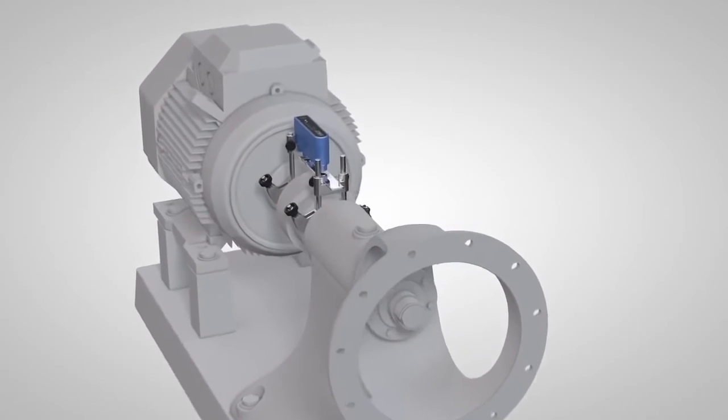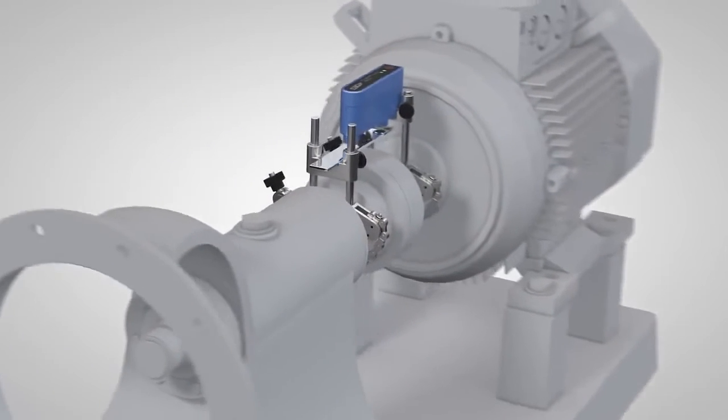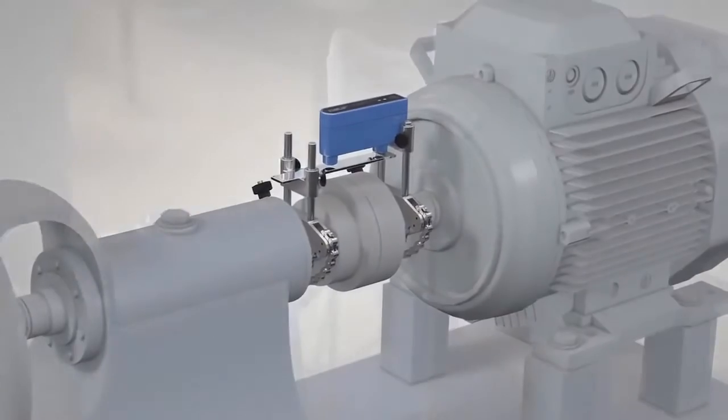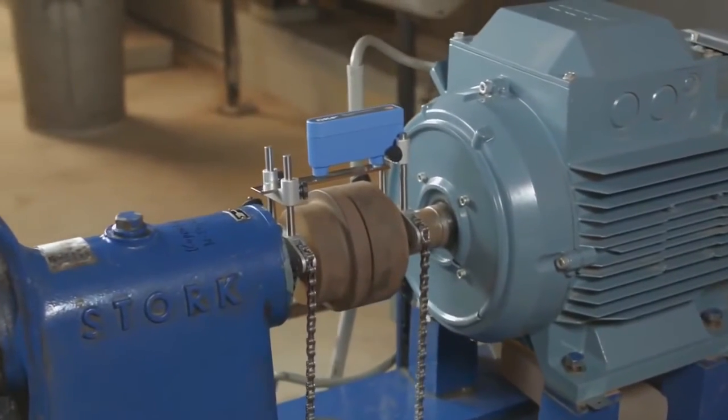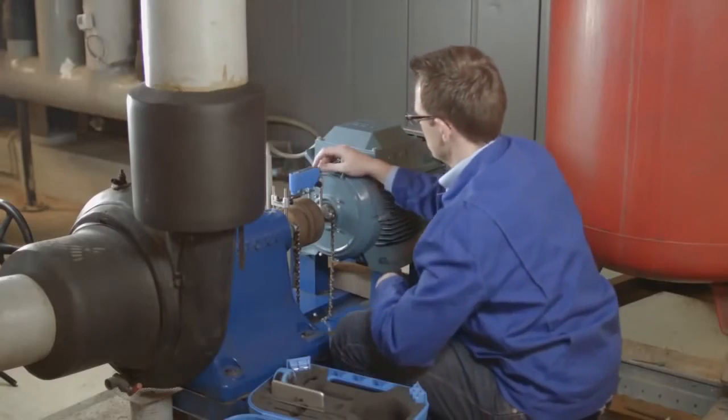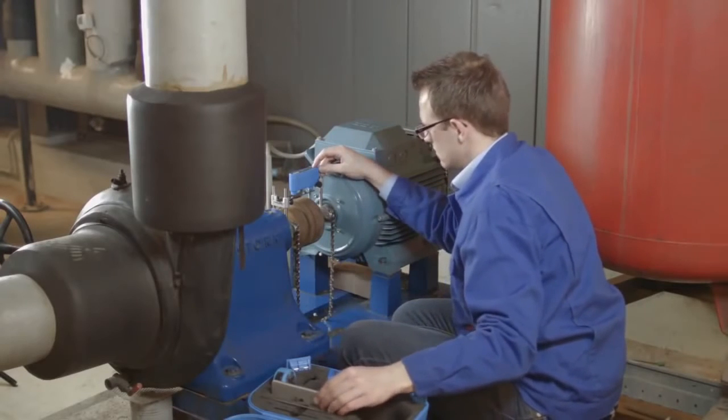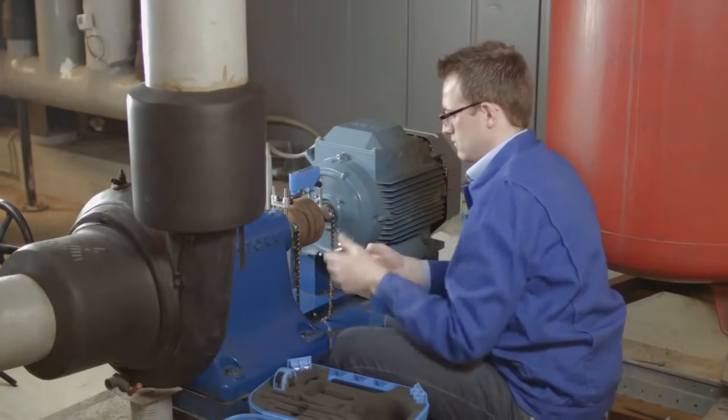To perform shaft alignment on your machines, simply mount the TKSA 11 on both shafts or sides of the coupling. Turn the measurement unit on and start the TKSA 11 app on your mobile device.